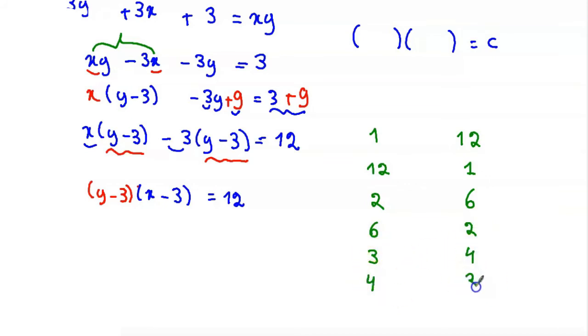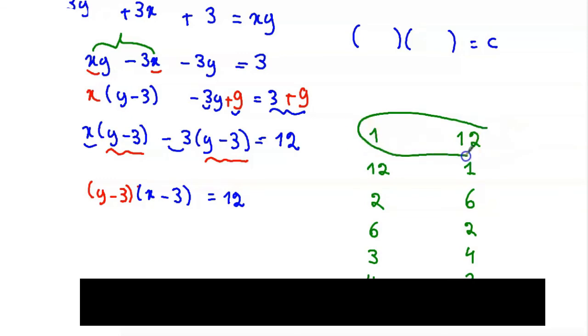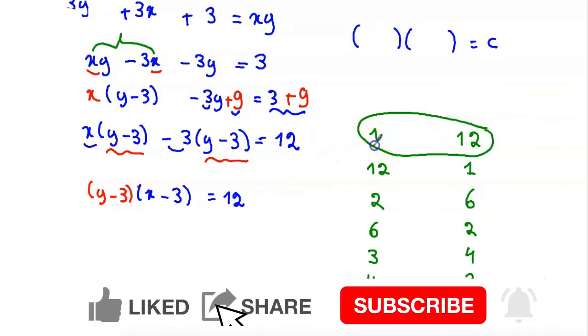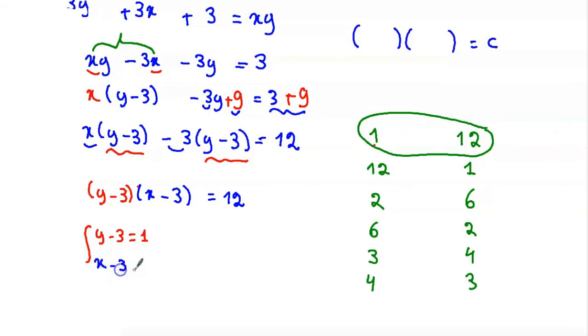The first case when y minus 3 equal to 1 and x minus 3 equal to 12. So we will get y equal to 4 and x equal to 15. So these are the first solution.